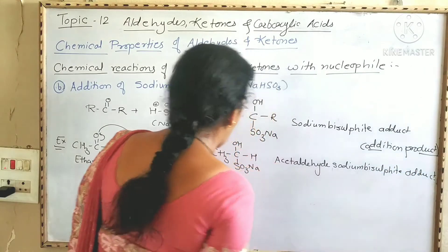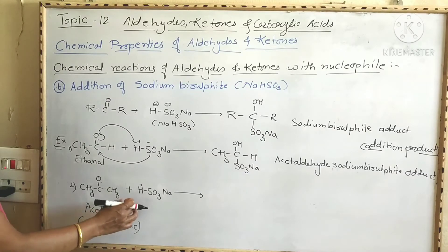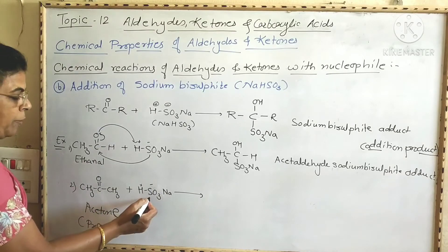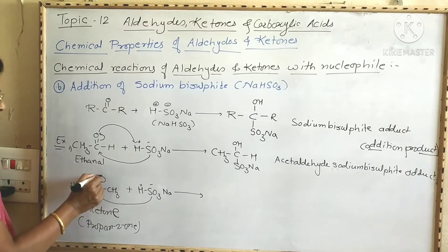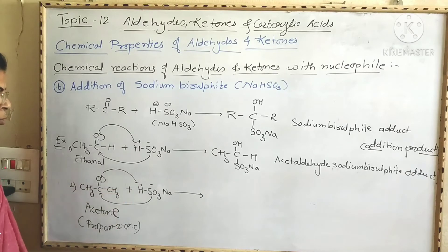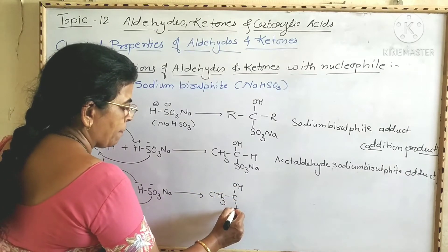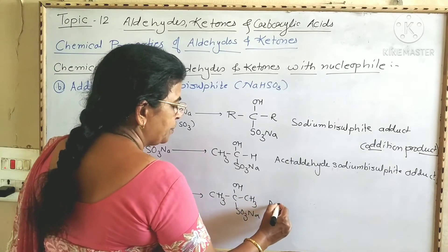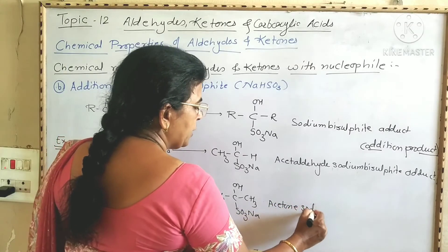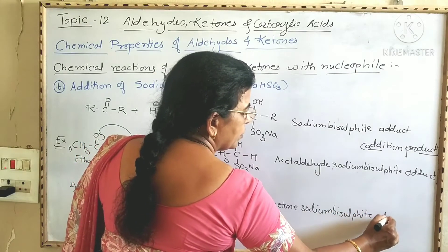The second example is with acetone, also called propanone. When acetone is treated with sodium bisulfite, the negative part SO₃Na gets attached to the carbonyl carbon, then the pi electrons shift onto the oxygen atom and attach to the H⁺ ion, to form the acetone sodium bisulfite adduct, which is the addition product.